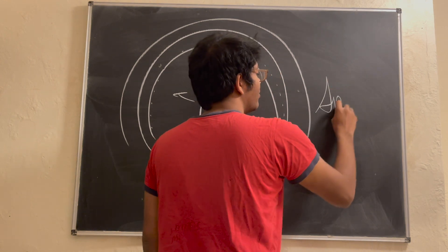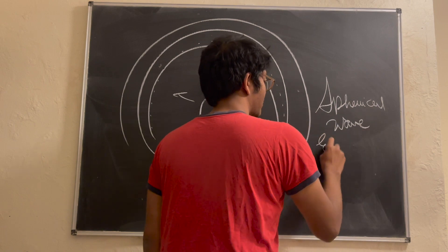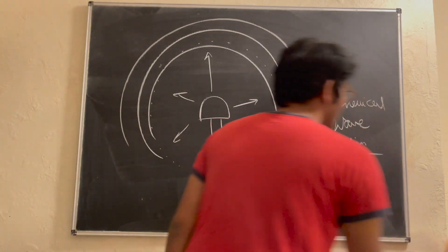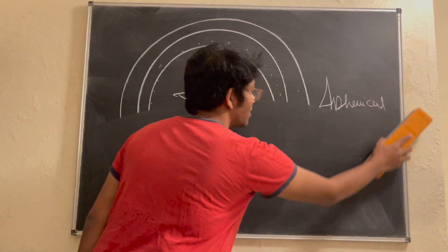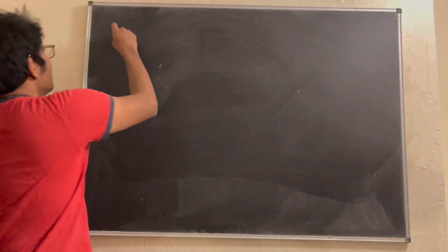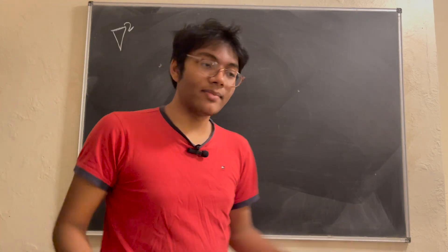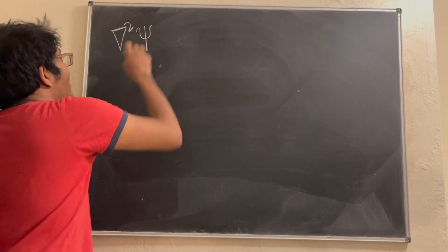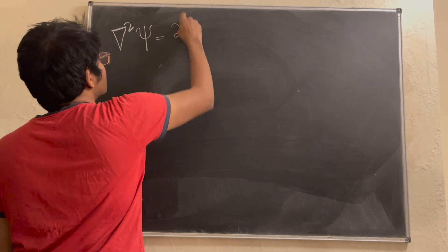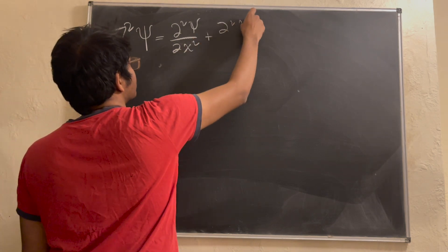So our goal is to derive the spherical wave equation. All right, so first step we got to write down is the Laplacian. What is the Laplacian? The Laplacian is kind of like the second derivative, but in 3D space or n-dimensional space. So the Laplacian of psi, psi being the solution to our wave equation, is going to be partial squared of psi with respect to each position variable.